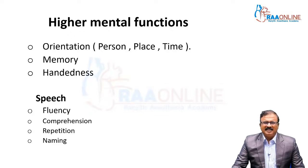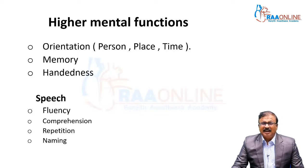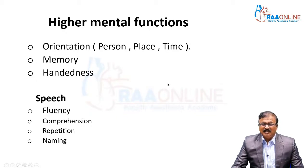We know the basics of how to assess each aspect. Handedness is important because most right-handed individuals have a left dominant hemisphere. Why we want to know handedness is that dominant hemisphere lesions only produce speech defects and other higher mental function abnormalities. Interestingly, even with left-handed individuals, around 40 to 50 percent still have the left side as dominant.